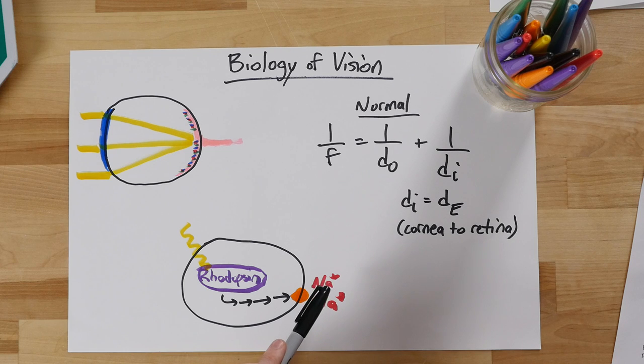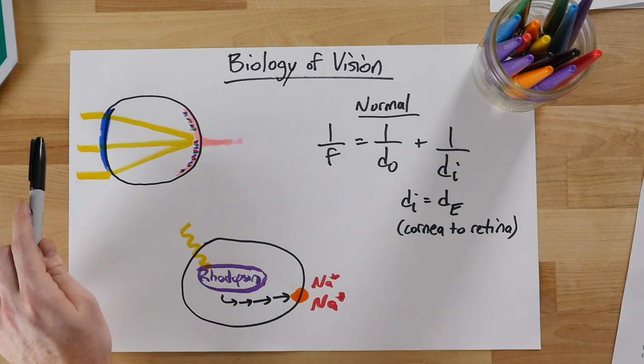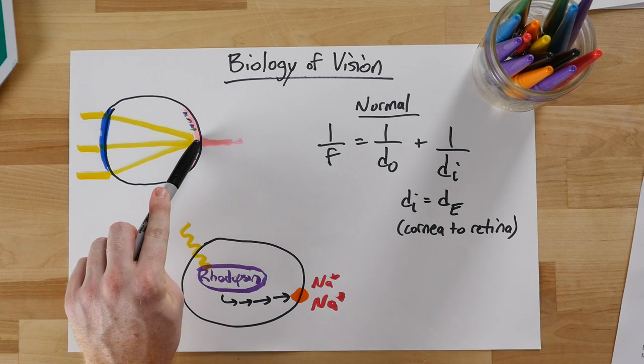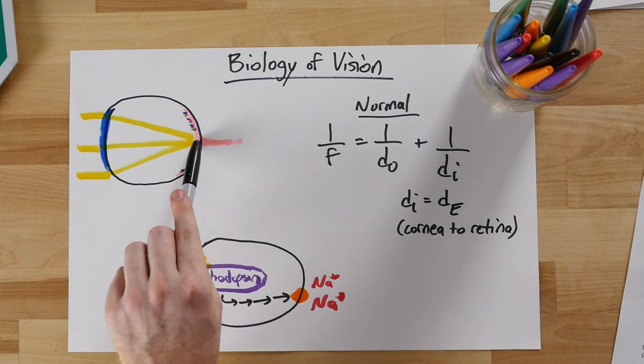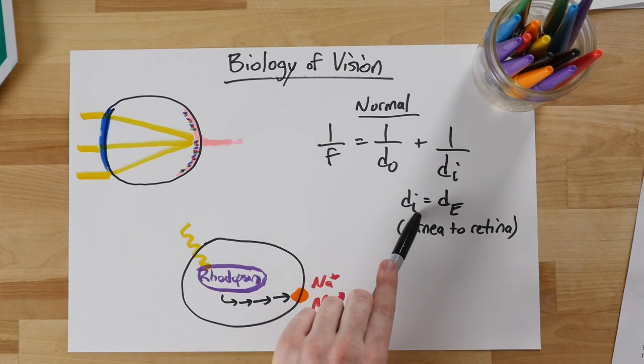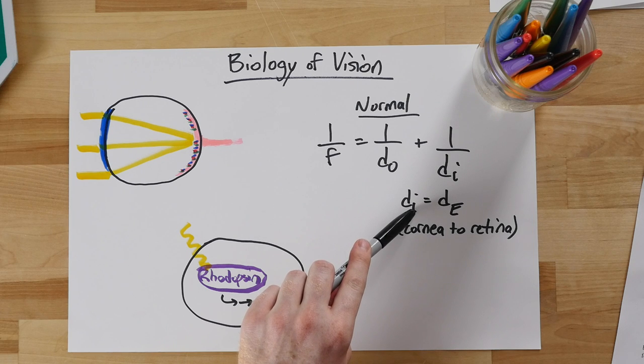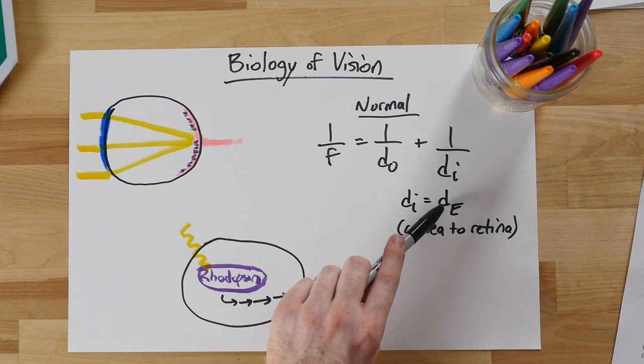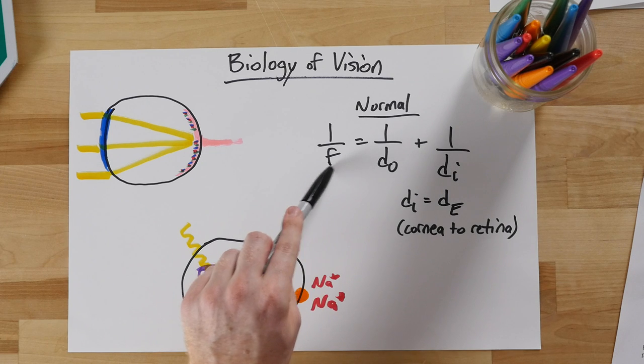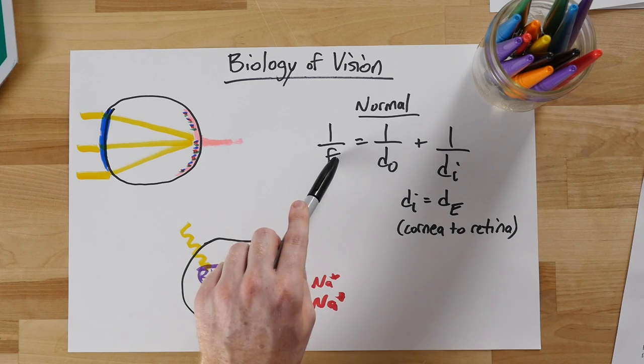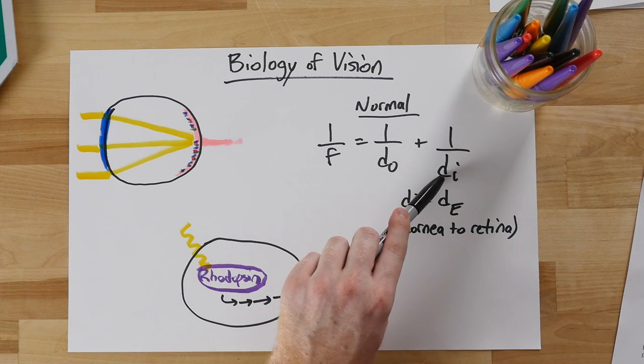In normal vision, we can take light rays coming from an object and make a real image on our retina. Because our lens is in our eye and we're making an image on the retina, the distance of the image from the lens is always just the size of our eye. Based on that and the distance of our object, our eye will adjust to make a new focal length in order to keep this distance the same.